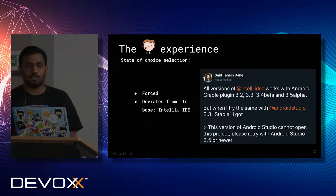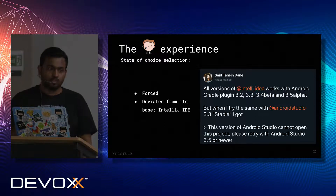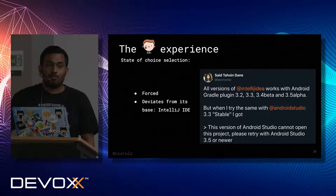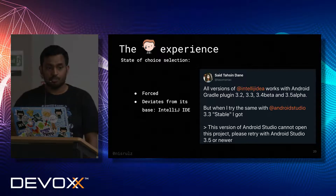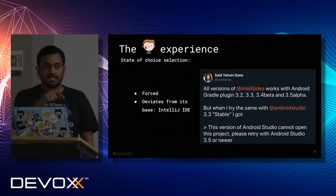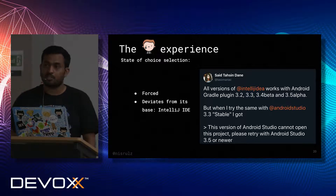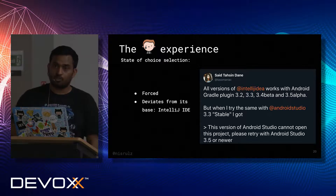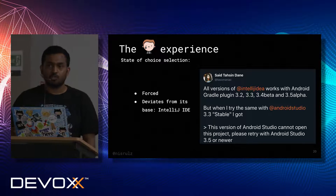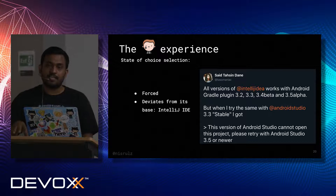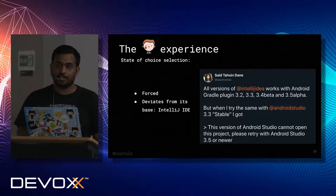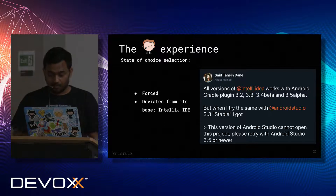The state of choice selection for Android Studio is becoming more forced. A GDE mentions that when he uses IntelliJ IDEA, he can work with the Android Gradle plugin 3.2, 3.3, 3.4 beta, and 3.5 alpha without any issues. But with Android Studio 3.3 stable, he gets the message that this version of Android Studio cannot open the project because it's not supported, forcing a dependency upon him. Since Android Studio is built on top of IntelliJ IDEA, if IntelliJ IDEA works fine, the choice should not be forced on developers.